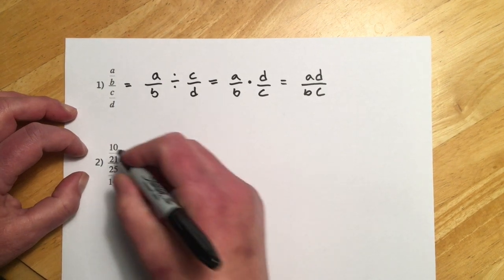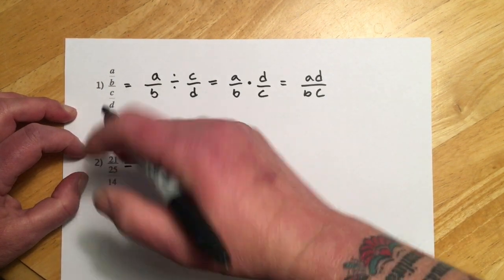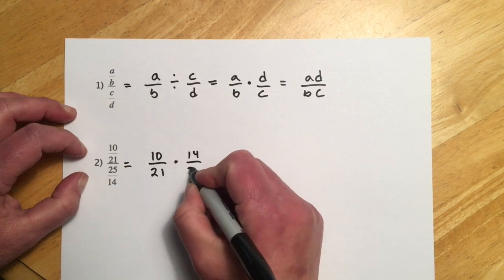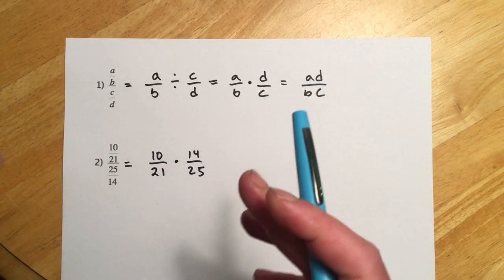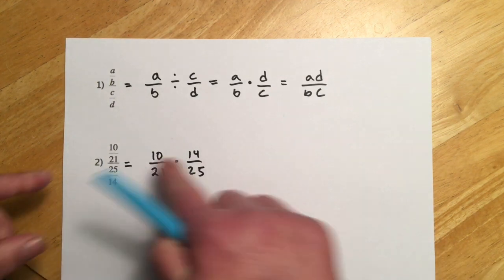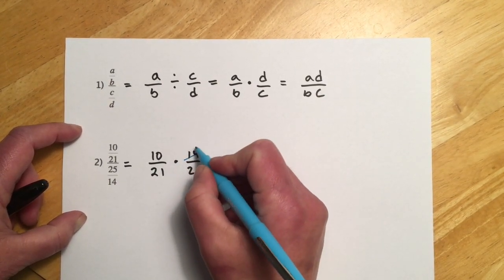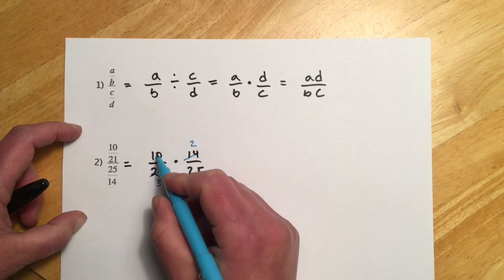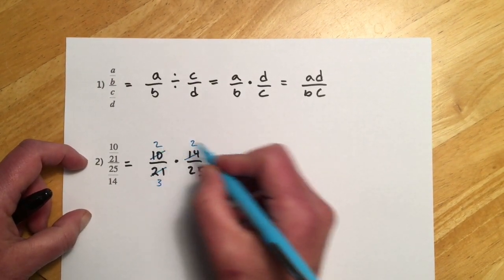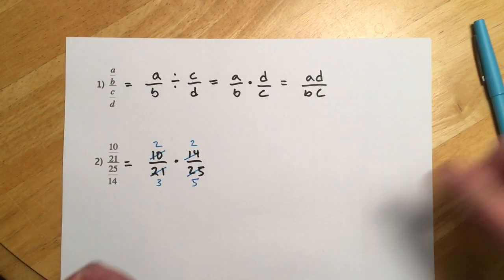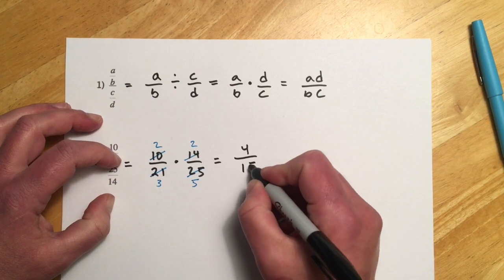So I'll do that here. If I think of this as 10 over 21, multiply by the flipped fraction — 14 is now the numerator and 25 is the denominator. Rather than multiplying straight across, look at the pieces first and reduce. 21 and 14 share a 7: 7 goes into 21 three times, into 14 twice. 10 and 25 share a 5: 5 goes into 10 twice, into 25 five times. Then 2 times 2 is 4, and 3 times 5 is 15.